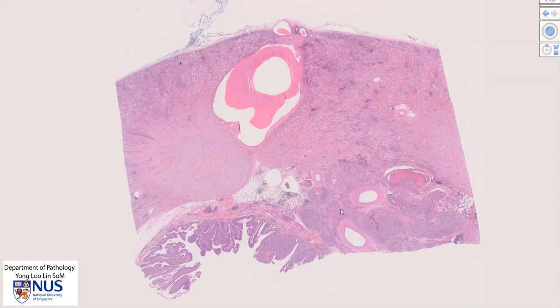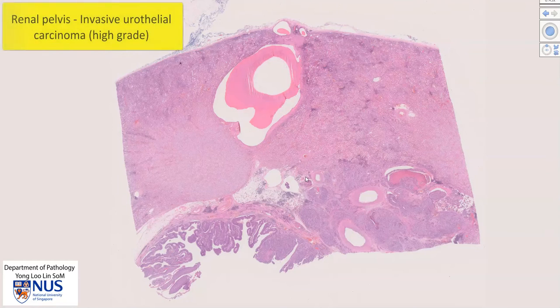This is a virtual microscopy slide showing a case of invasive urothelial carcinoma involving the renal pelvis and also invading into the underlying kidney.